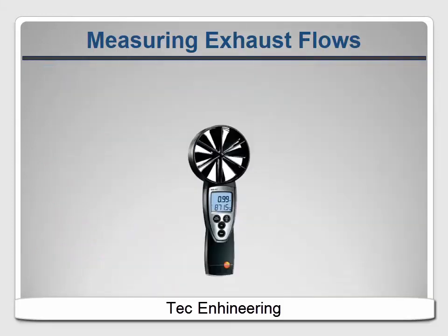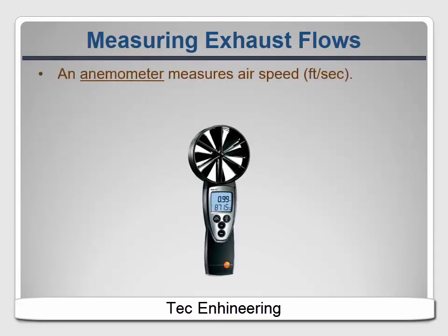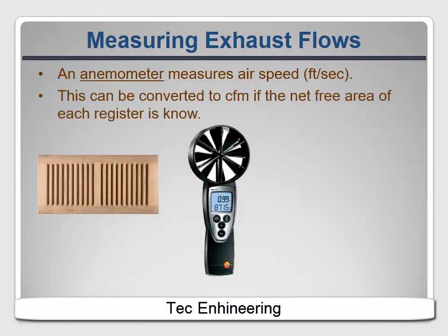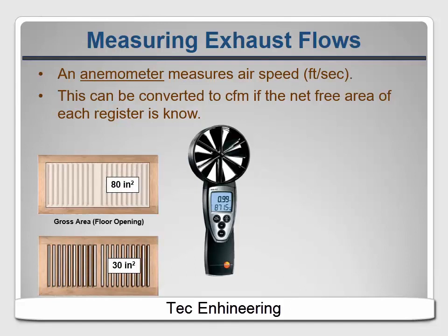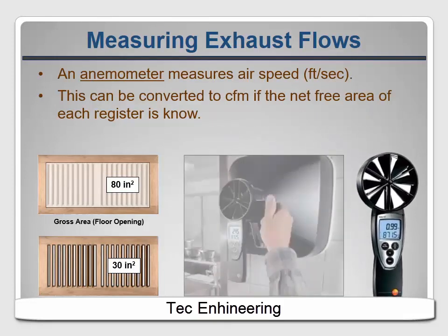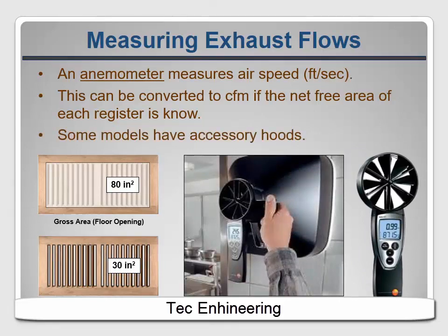The last option is called an anemometer, which has a propeller that measures the velocity of the air going into or out of a register or grill, usually in feet per second. If you multiply that by the area of the opening, you can get the volumetric flow rate, though you have to do unit conversions to get from inches and seconds to cubic feet per minute. You also need to remember that the area of the opening is the net free area between the louvers, not the total area of the register. Basic anemometers can be purchased for under $100. An anemometer made by Testo eliminates the mathematical complications by offering it with a hood attachment that makes the inlet area consistent so it can calculate the CFM for you; it's compact and easy to use and the whole setup costs about $750.